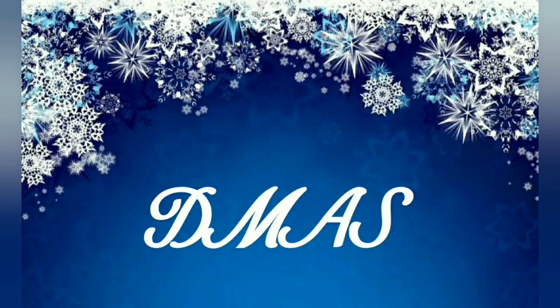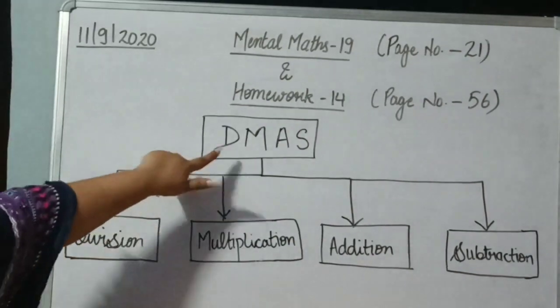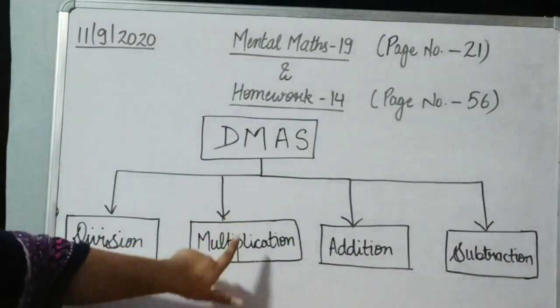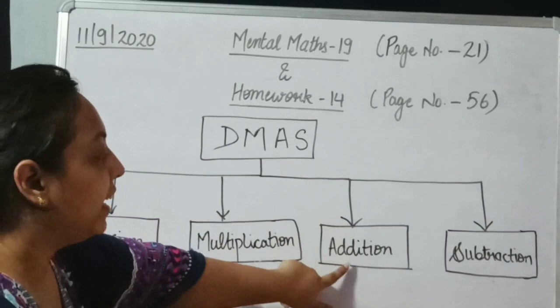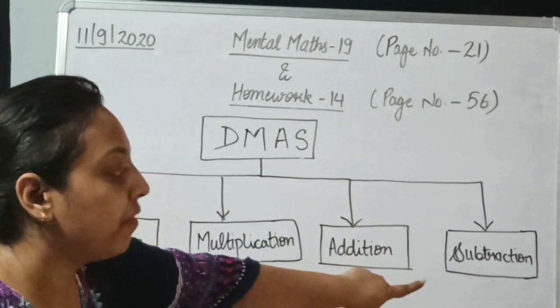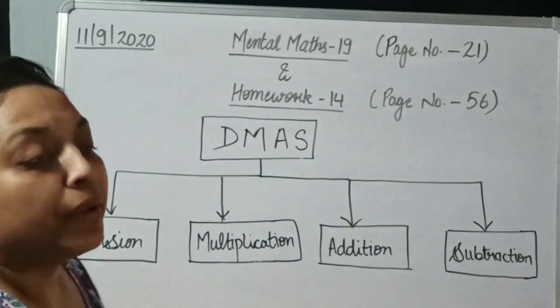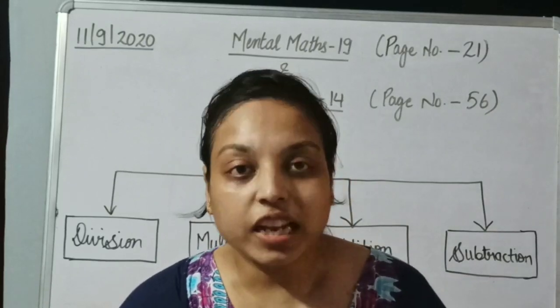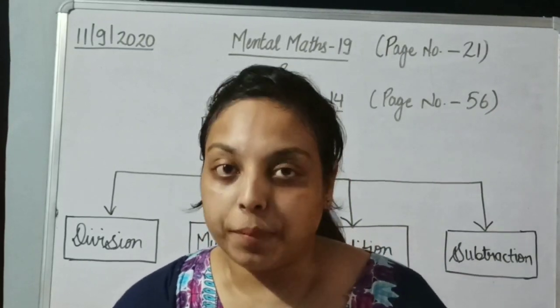Now in this video, we are going to do DMAS. DMAS stands for D for division, M for multiplication, A for addition and S for subtraction.